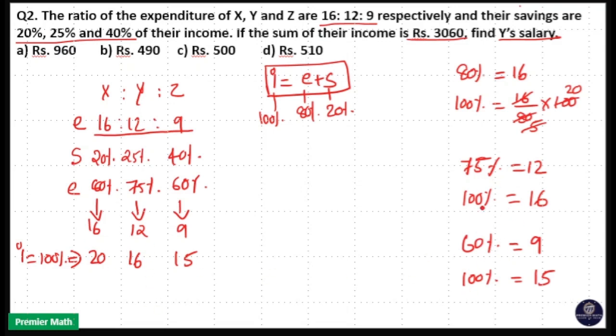Here you know 20 and 16 and 15 are the salaries of X, Y and Z. So 20 plus 16 plus 15 is equal to 51 parts. That is equal to total income, that is 3060.